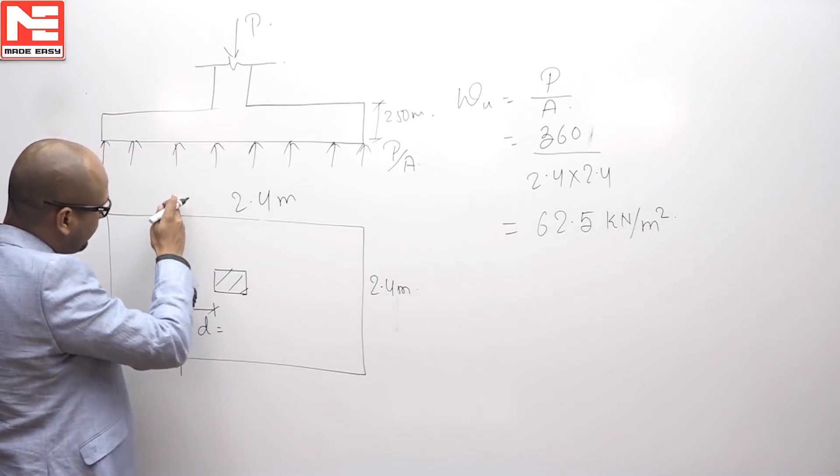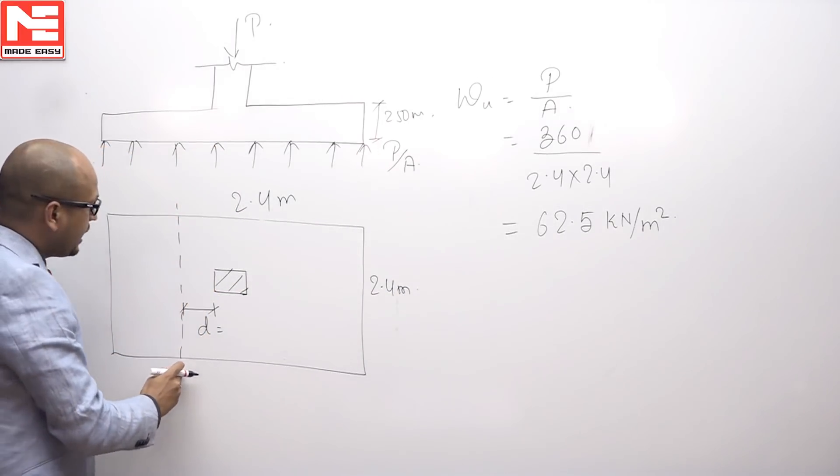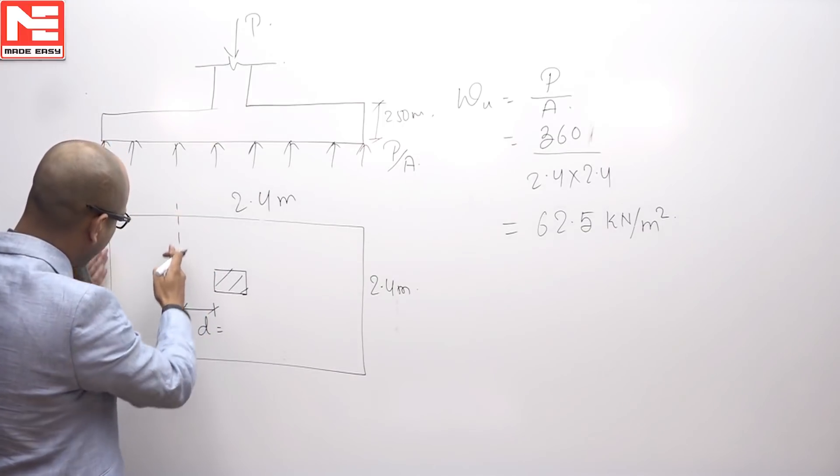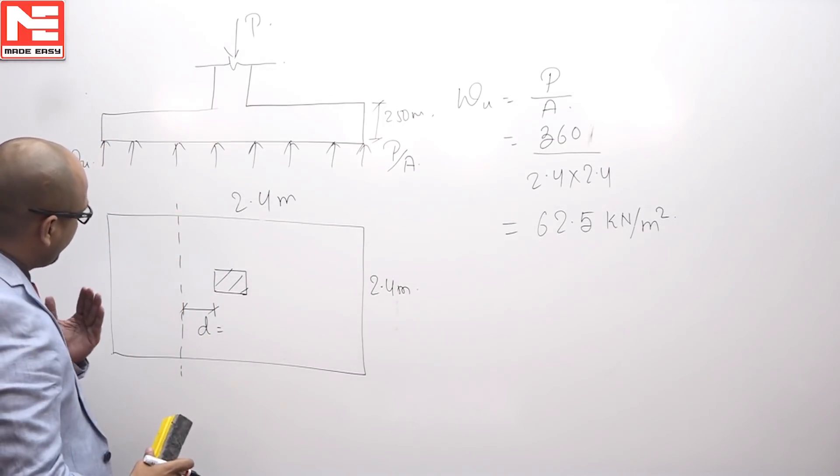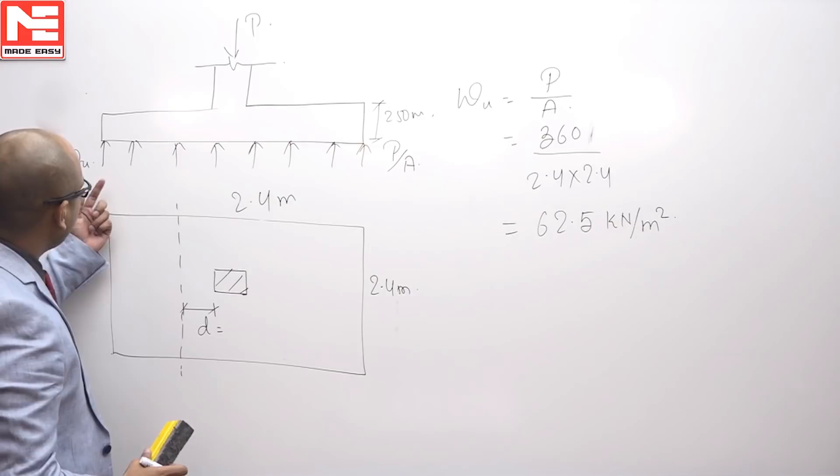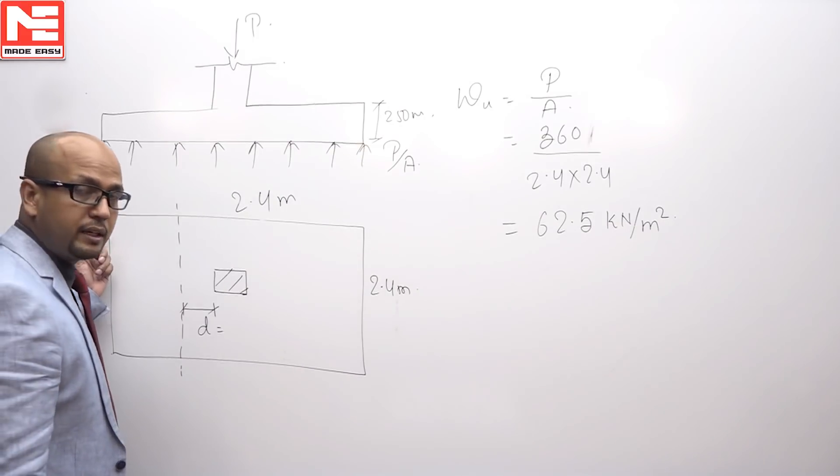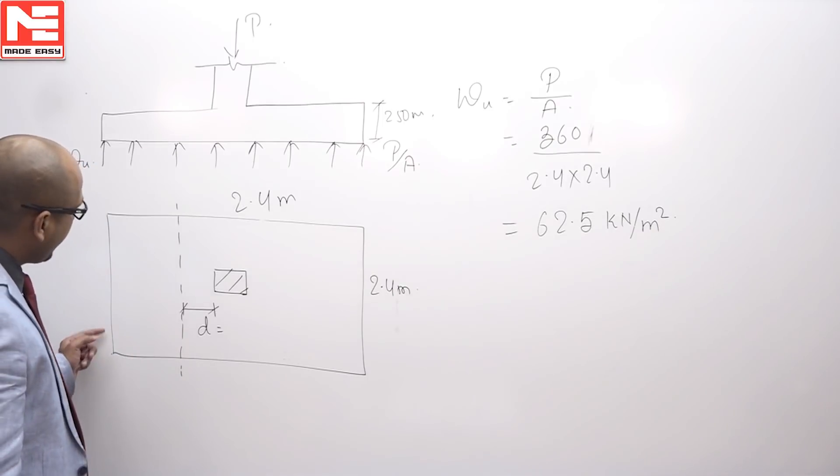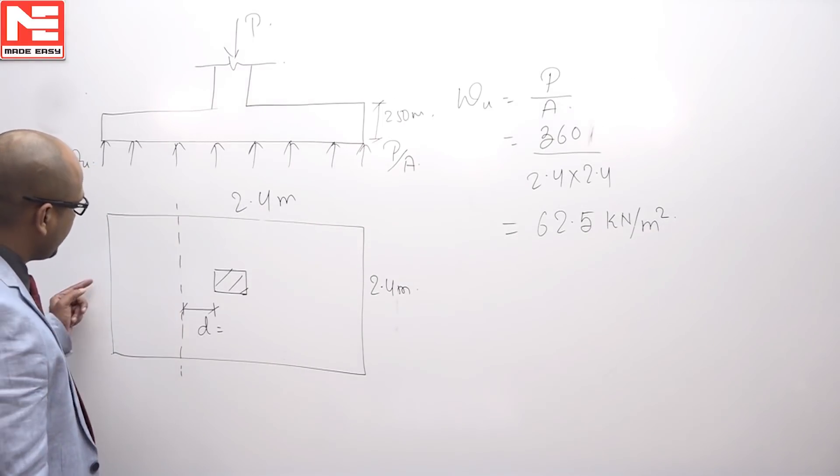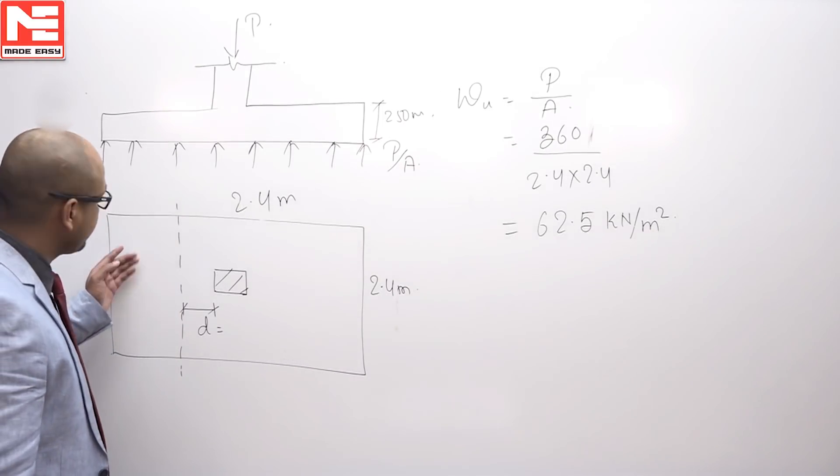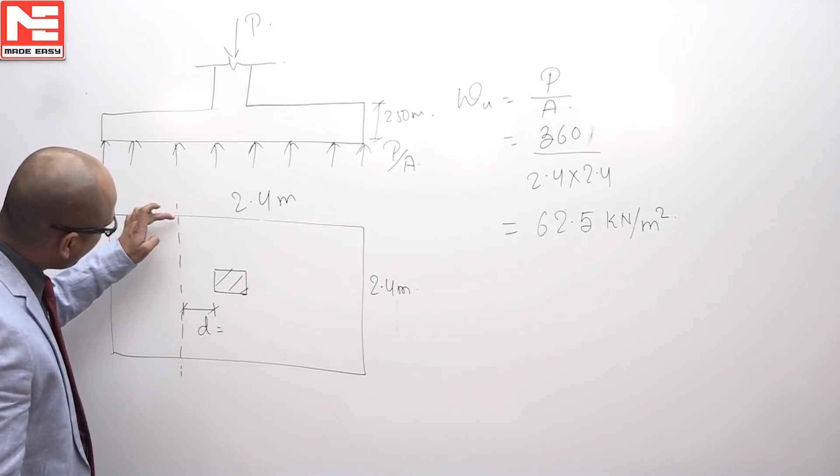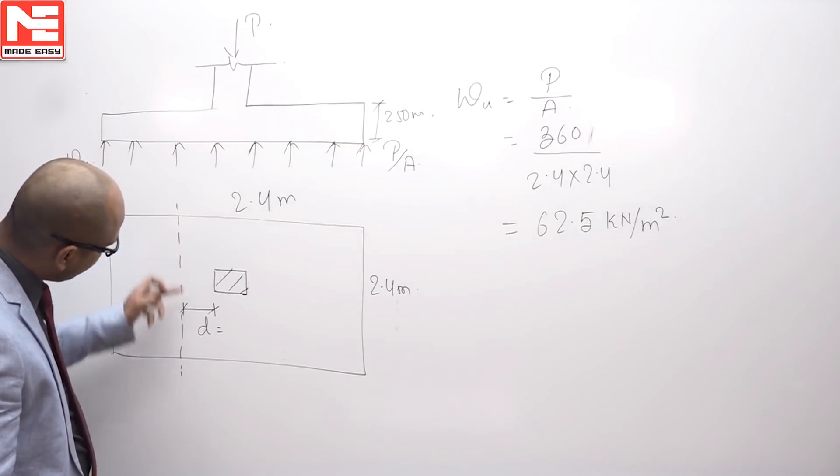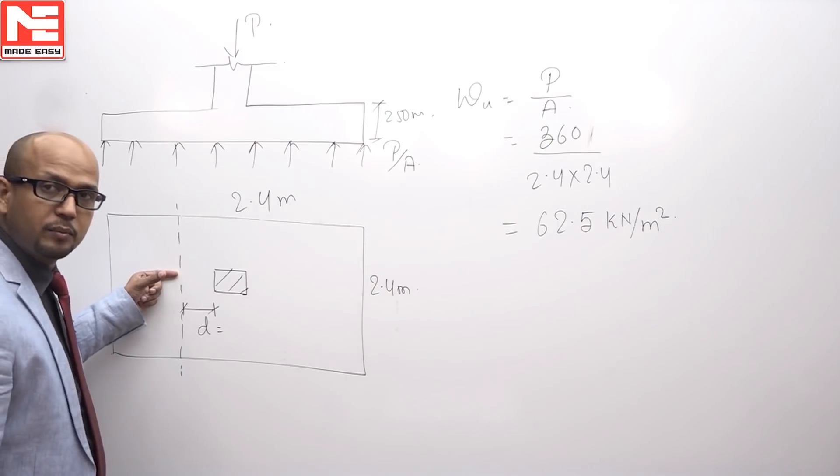Now you have to calculate shear force over this cross section. It means in one way shear this entire portion will come up. We will just calculate stress pressure acting on this portion and multiplied by this area that will be shear force and resisting area will be calculated corresponding to this cross section, this line multiplied by thickness of the slab.